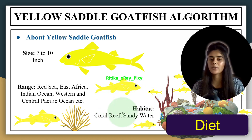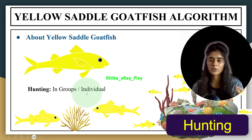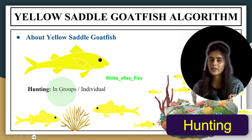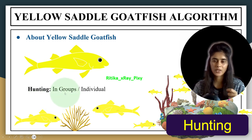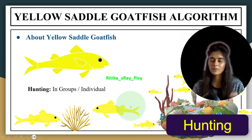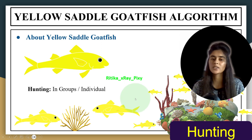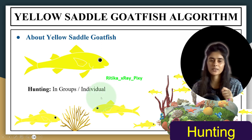Regarding hunting, yellow saddle goatfish can perform individual or group hunts. They are often seen hunting in groups because group hunting is more effective — with more individuals searching for prey, there is more food and it increases the chances of finding it. Group hunting also allows them to explore the entire area and provides protection from predators.